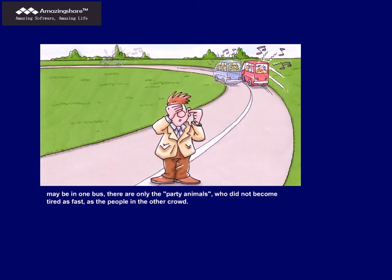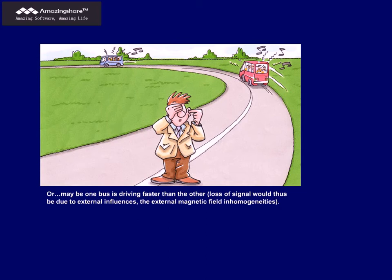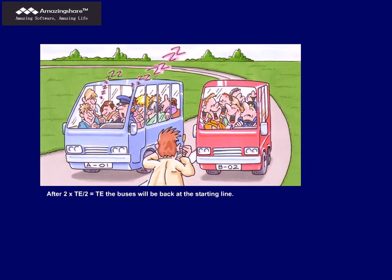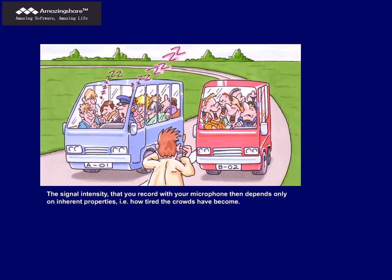Or, maybe one bus is driving faster than the other. Loss of signal would thus be due to external influences, the external magnetic field inhomogeneities. To figure out what the actual reason is for the signal disappearing, you can make the buses turn around after a certain time, half of TE, and have them drive back with the same speed also for the time half of TE. After two times half of TE, equaling TE, the buses will be back at the starting line. The signal intensity that you record with your microphone then depends only on inherent properties. In other words, how tired the crowds have become.